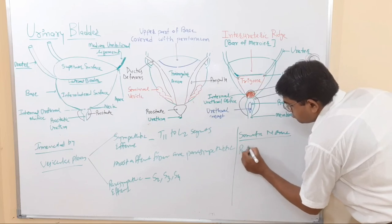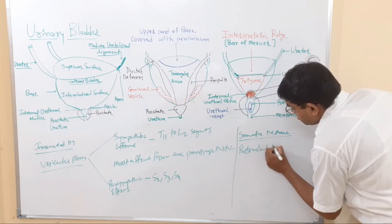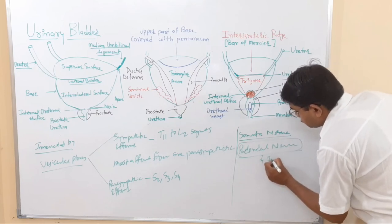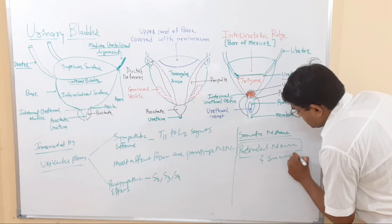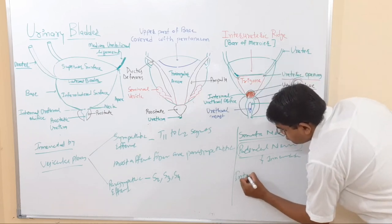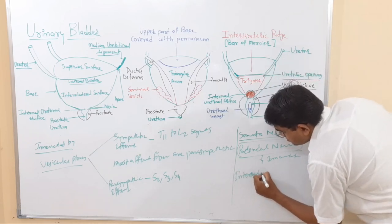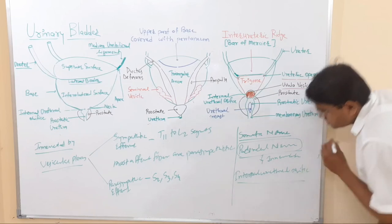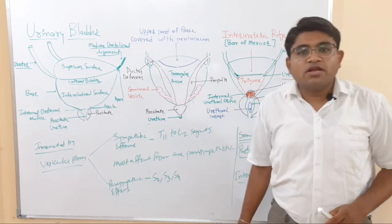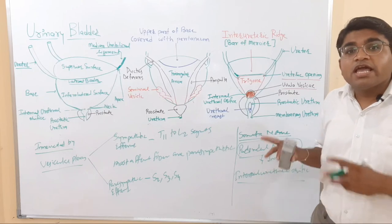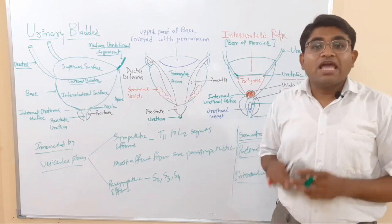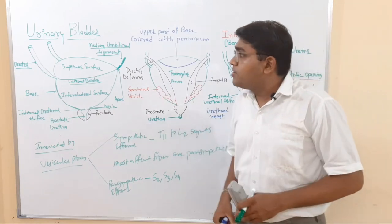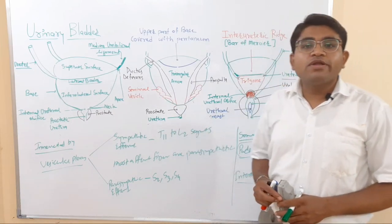The somatic nerve supply is via the pudendal nerve, which innervates the internal urethral orifice.